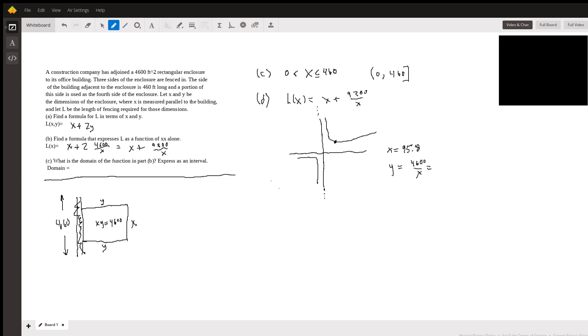And that gives me 48 even. So 48 times 95.8 gives me a 4600 square foot enclosure, so the x times y matches the 4600.